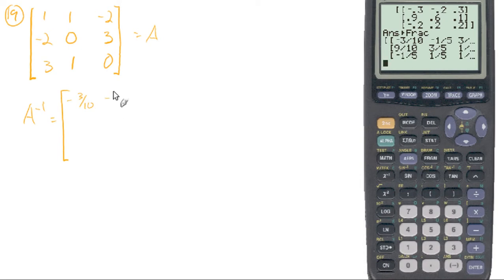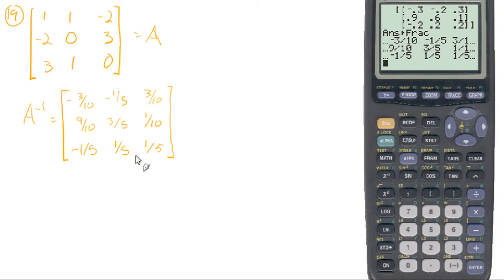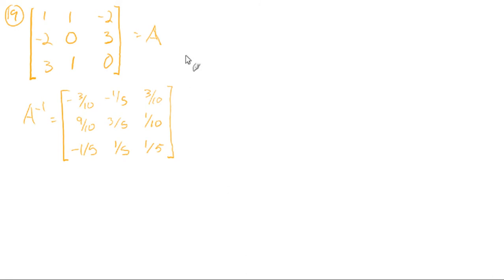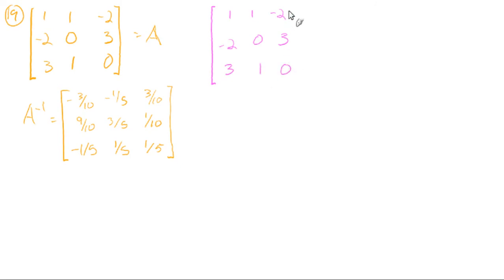Negative 3 tenths, negative 1 fifth — there it is, A inverse. You may be thinking: look at all those fractions, could that possibly be right? And yeah, it is. I double-checked to make sure all these entries are correct, and if you put them in the calculator correctly it does find the correct inverse. But if we wanted to verify it mathematically — which is actually what the book is asking for — we need to take A times A inverse and get the identity. Or A inverse times A. Either way. We'll do A first, and to truly verify this we have to do both orders and get the identity matrix both times.